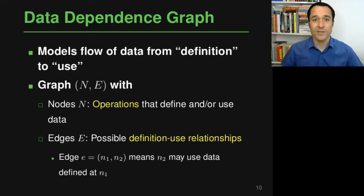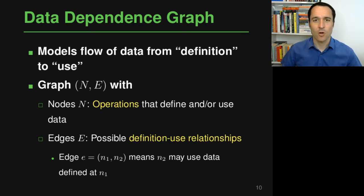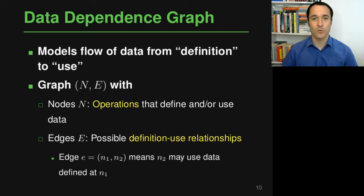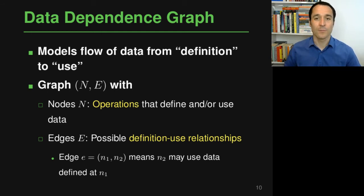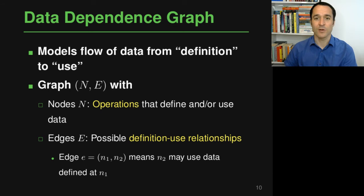The final program representation I'll introduce is the data dependency graph. In contrast to a control flow graph, which looks at the order statements are executed, a data dependency graph models the flow of data from one operation to another — specifically from a definition, where data is written, to a use, where data is read. The nodes are all operations that either define or use data, and the edges represent possible definition-use relationships, so an edge from n1 to n2 means that n2 may read data that is written at n1.